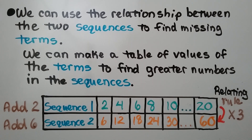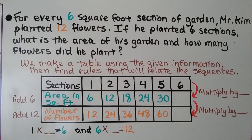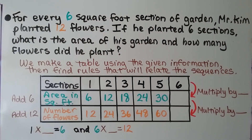Now if this was very confusing for you, just click the description and go back to video 9.5, and that will help you out. For every 6 square foot section of garden, Mr. Kim planted 12 flowers. If he planted 6 sections, what is the area of the garden and how many flowers did he plant?